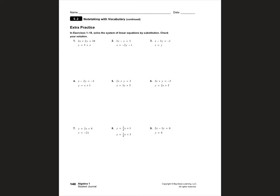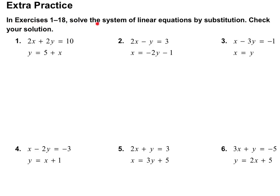Moving on to page 140. In exercises 1 through 18, solve the system of linear equations by substitution and check your solution. Let's look at number 1. I notice that I already have y solved for, so I can skip step 1. I'm going to take that expression and substitute it into the top equation for y. I'll rewrite that top equation: 2x plus 2, and instead of y I'll put parentheses, equals 10. I'll substitute in what y equals from the other equation, which is 5 plus x. Now I only have x's in this equation and can solve.